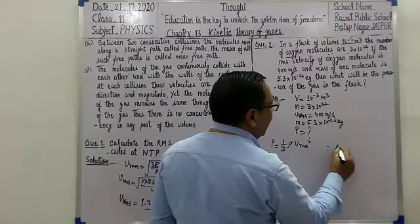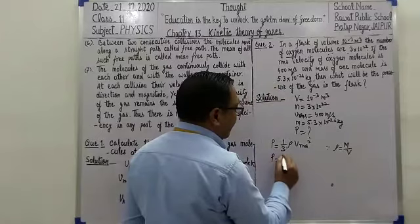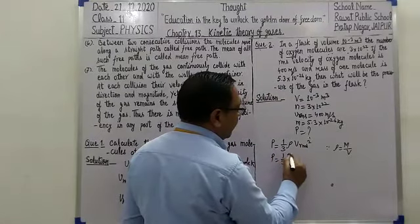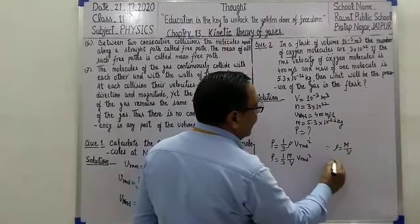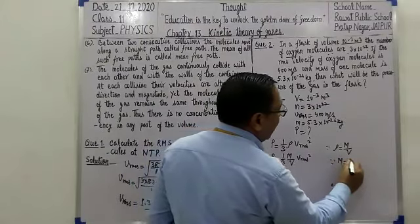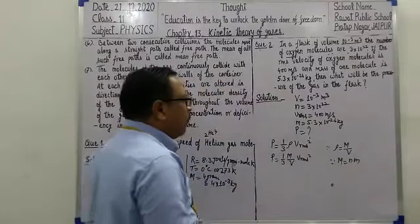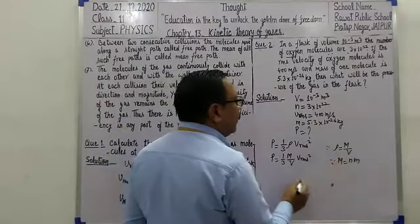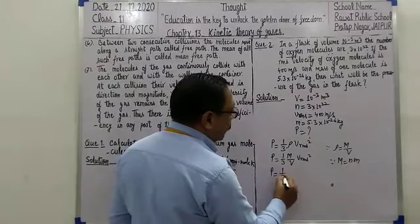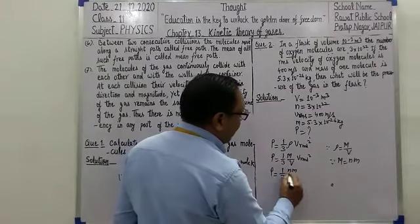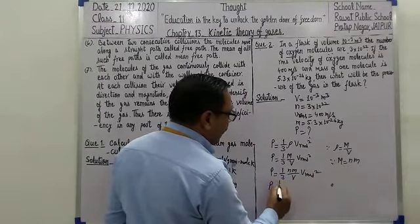یہاں پر ρ (rho) جو ہے وہ mass upon volume ہے۔ Put کریں گے تو P = (1/3) × (mass/volume) × Vrms²۔ Total mass of the gas = number of molecules × mass per molecule, یعنی M = N × m۔ So P = (1/3) × (Nm/V) × Vrms²۔